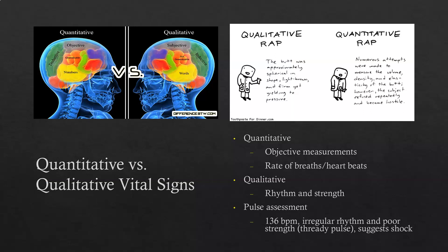When assessing vital signs, we're going to have both quantitative and qualitative assessments. The quantitative assessments are the objective measures — things like number of breaths or heartbeats per minute. We also need a qualitative assessment that uses words to describe the vital sign and the findings, such as rhythm and strength.